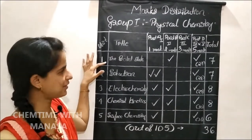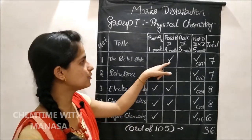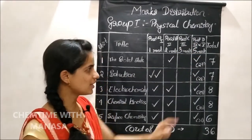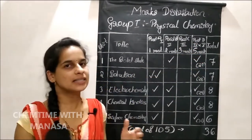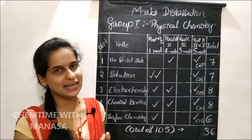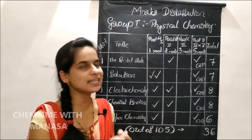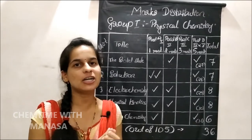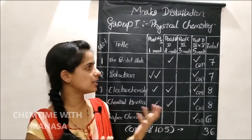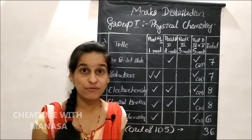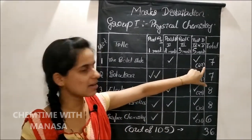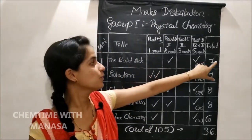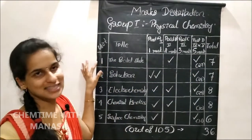First chapter: the solid state. From solid state, you can expect a 2 mark question in Part B and a 5 mark question in Part D. Generally, in that 5 mark question there will be a division of 3+2 or 4+1. There will be a question on the calculation of packing efficiency or a numerical on the density formula. Sometimes there will be questions on the calculation of number of particles in a unit cell also. The 27th question in your question paper will be from the solid state chapter — 2 plus 5, totally 7 marks.